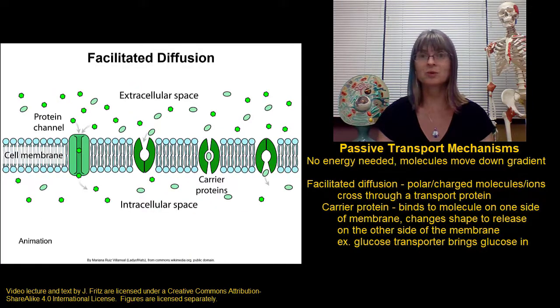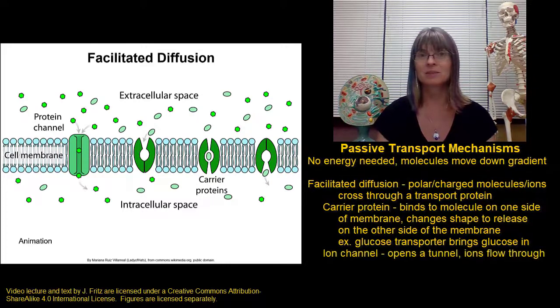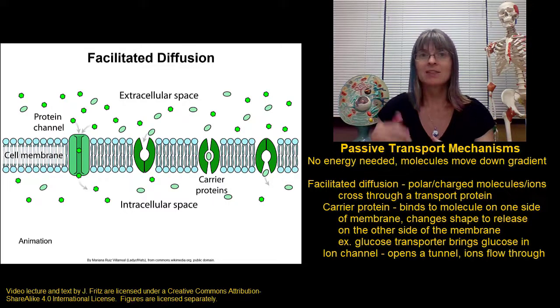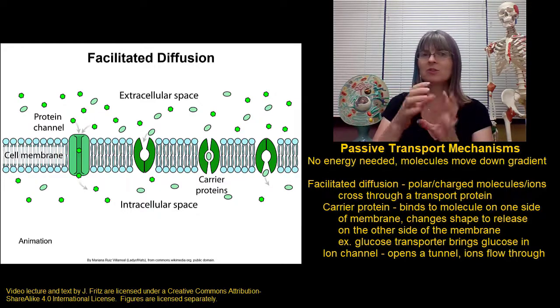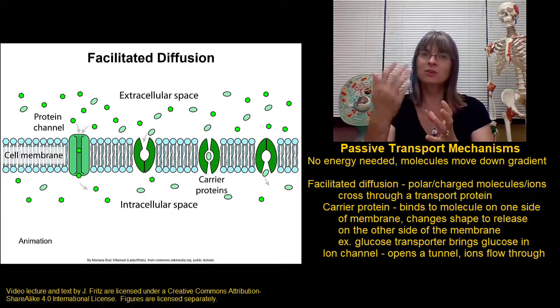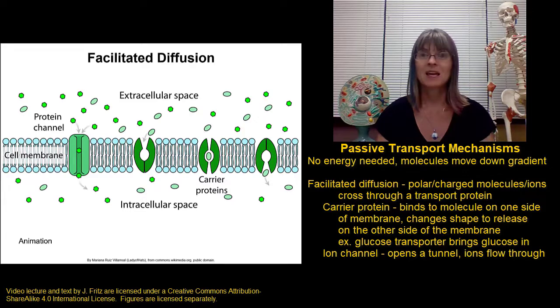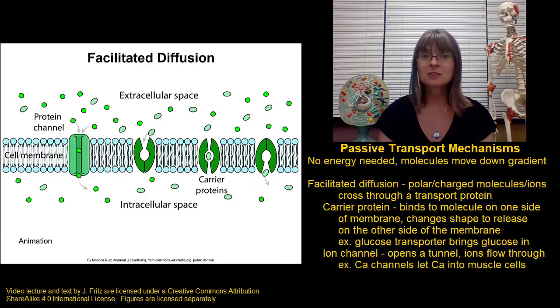A second type of transport protein that's important for facilitating diffusion is an ion channel. An ion channel opens a tunnel through the membrane that allows ions to flow through. So we don't have to bind each one individually and move it. They just flow through the tunnel when the tunnel is open. An example of this would be the calcium channels that allows calcium to flow into muscle cells to cause a muscle contraction.